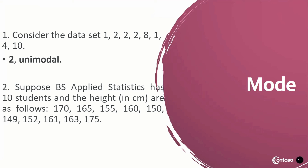Next example: suppose a BS Applied Statistics class has 10 students and their heights are as follows. As you can see, all the data here appeared only once. Therefore, there is no mode.